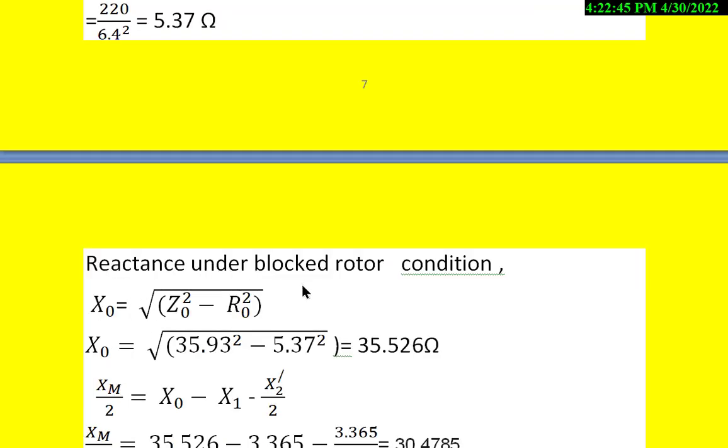Reactance under no-load condition: X0 = √(Z0² - R0²). Since Z0 and R0 are known, X0 = √(35.93² - 5.37²) = 35.526Ω.